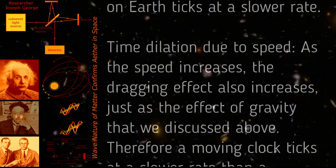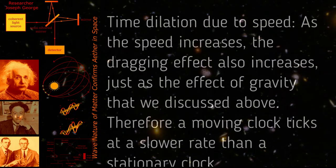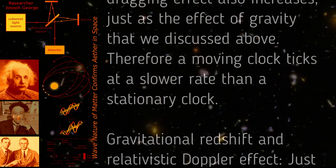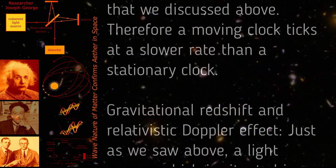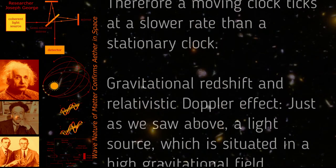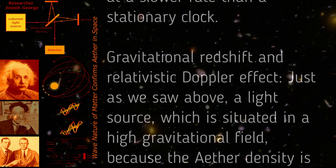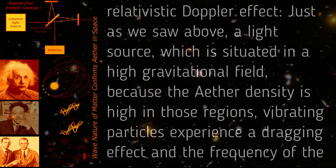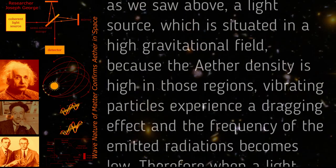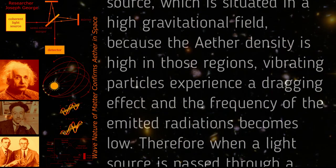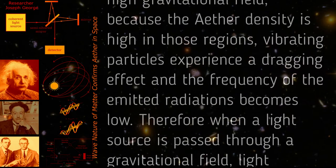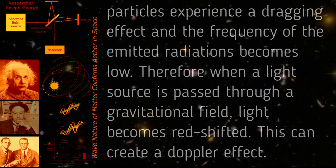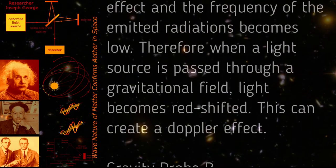Time dilation due to speed: As the speed increases, the dragging effect also increases, just as the effect of gravity that we discussed above. Therefore, a moving clock ticks at a slower rate than a stationary clock. Gravitational redshift and relativistic Doppler effect: Just as we saw above, a light source which is situated in a high gravitational field, because the ether density is high in those regions, vibrating particles experience a dragging effect and the frequency of emitted radiations becomes low.